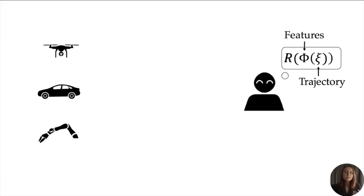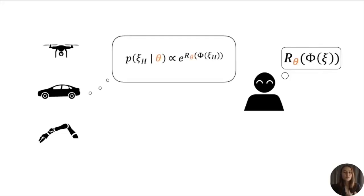This reward is typically parameterized by theta, which are weights encoding linear trade-offs between the features or even weights in a neural network. In the Boltzmann model, this reward induces a probability distribution over trajectories proportional to their exponentiated reward. This model is that people aren't perfectly optimal, but the higher cumulative reward a trajectory has, the exponentially more likely it is.